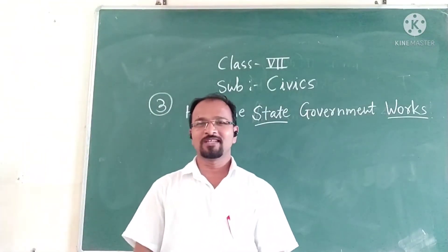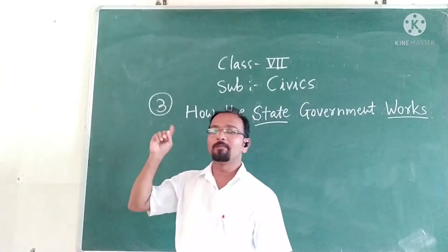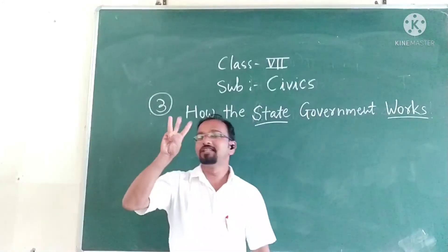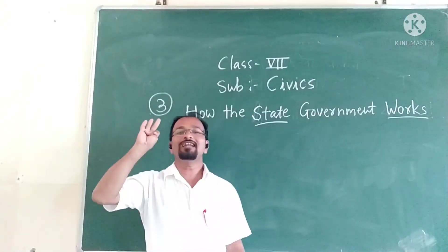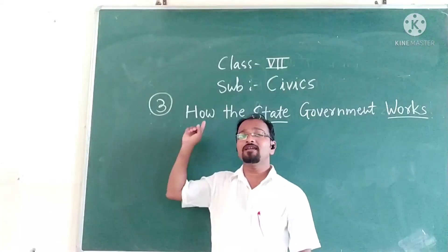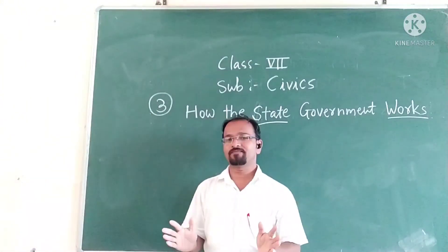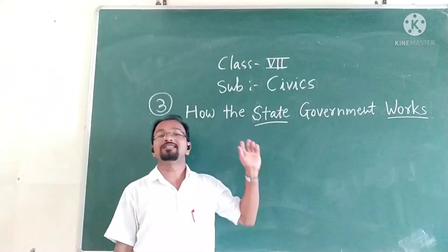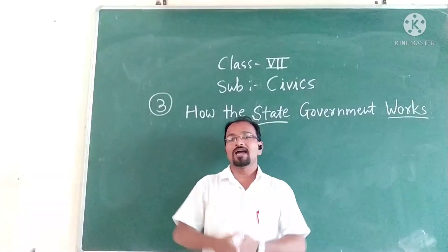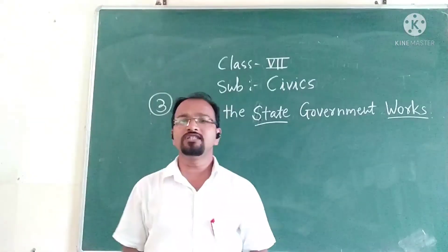Good morning students. Today we are going to learn about civics, third lesson: how the state government works. Last year we discussed the fact that government works at three levels — local, state, and national — and looked at the work of local government in some detail. In this chapter we examine the work of the government at the state level, the role of a Member of the Legislative Assembly (MLA), and how people express their views or demand action from government.